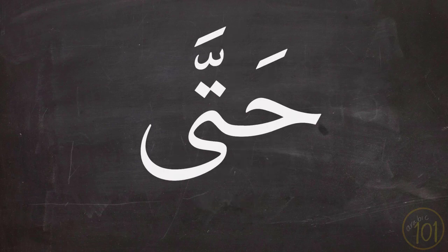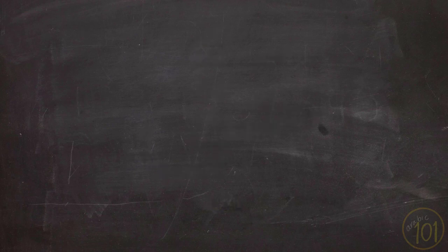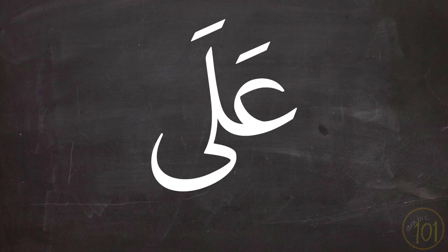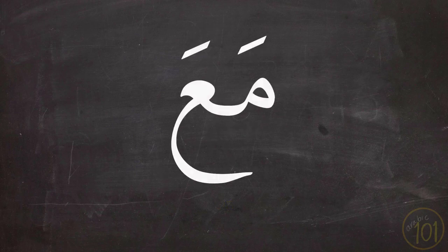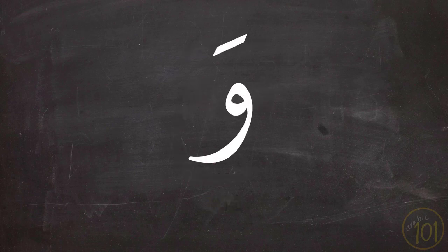The next one is حَتَّى and it means 'until'. The next preposition is عَلَى and it means 'on'. Next is مَعَ and the meaning is 'with'. Finally, وَ and it means 'and' or 'by'.